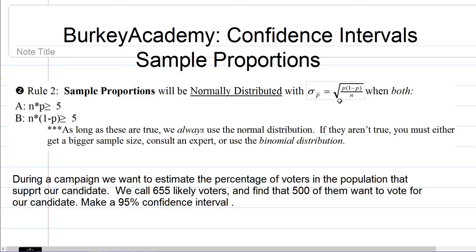When both of these two things are true, our sample size times the proportion, n times p—and p here literally means the population proportion, but if you don't know the population proportion, use your sample proportion instead—has to be greater than or equal to 5. The bigger the better.